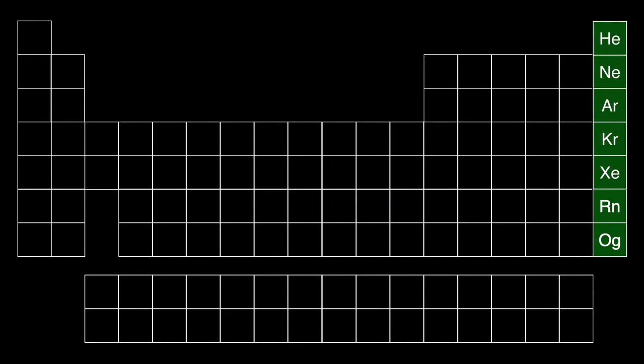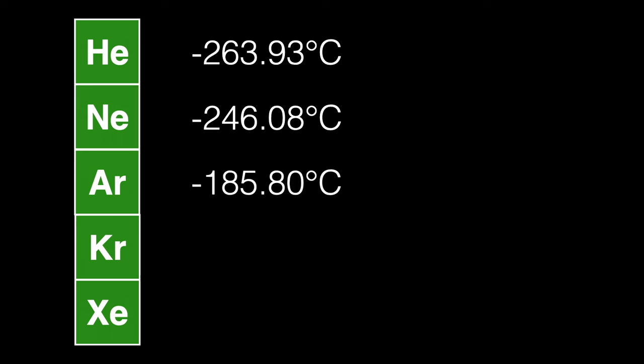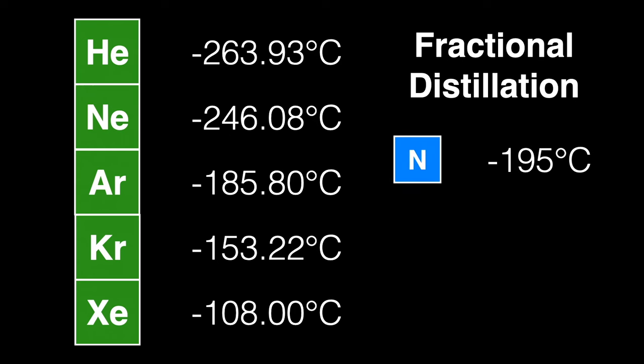Let's look at how Ramsey and Travers purified the noble gases found on the right side of the Periodic Table. We are going to ignore the radioactive radon and oganesson just to simplify things. As you move down the column, the boiling temperatures of the elements are higher and higher.